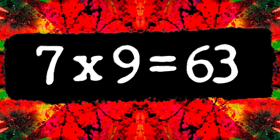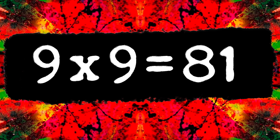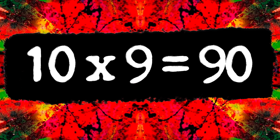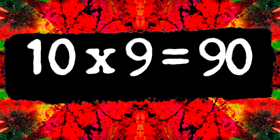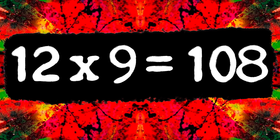7 times 9 is 63. 8 times 9 is 72. 9 nines are 81. 10 times 9 is 90. 11 times 9 is 99. And then 12 multiplied by 9 equals 108.